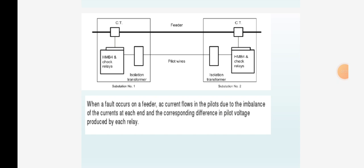Under normal conditions and in case of external faults, the secondary currents are equal and circulate in the pilot wires. The differential current of the two current transformers is zero and the relay does not operate. During internal faults, this balance is disturbed and differential current flows through the relay operating coil.